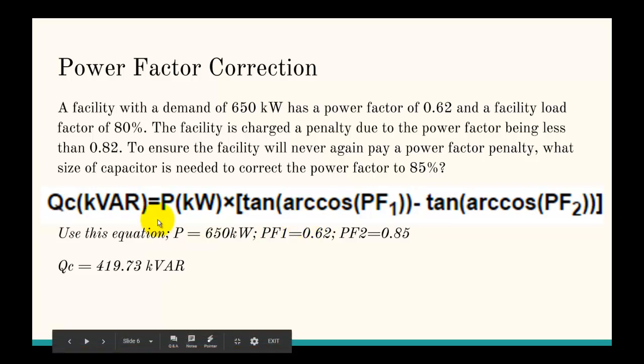Which is that the size of the capacitor in kilovars equals the power in kilowatts times this term here. Which is the tan of the arccos, or the inverse cosine of power factor one, minus the tangent of the arccos, the inverse cosine of power factor two. And, when you plug all those values from the equation, P equals 650, power factor one equals 0.62, and two equals 0.85, you get about 420 kilovars. So, that's how to do that problem.